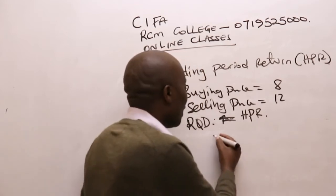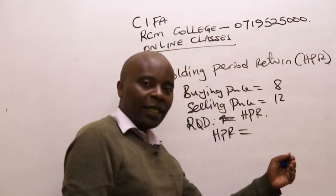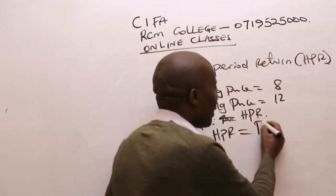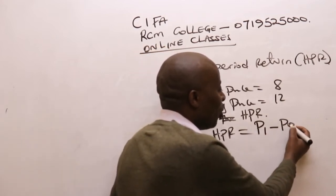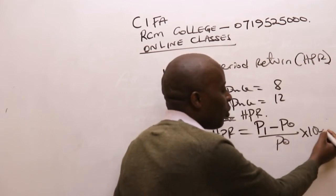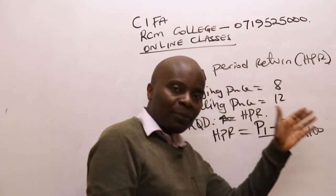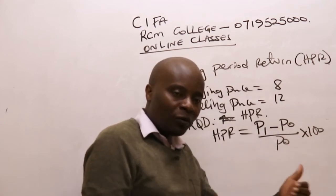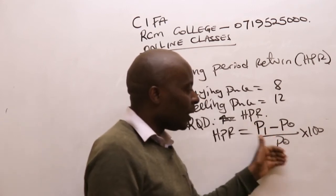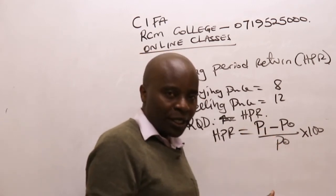So how do I get the holding period return? The holding period return here will be the capital gain. So how do I get the capital gain? I will take P1 minus P0, all over P0, times 100. That is the price at the end of year one minus the price of this share at the beginning of the year, divided by the price at the beginning of the year, times 100.